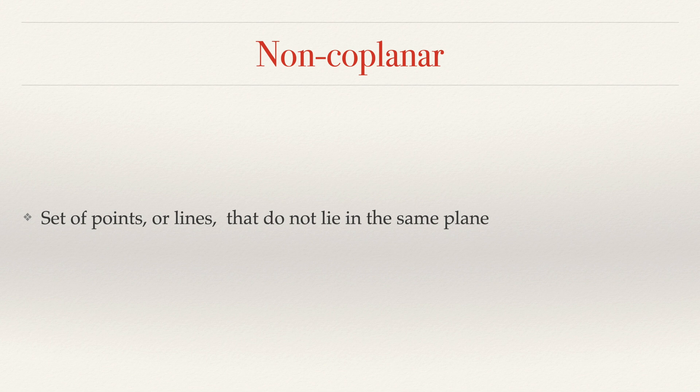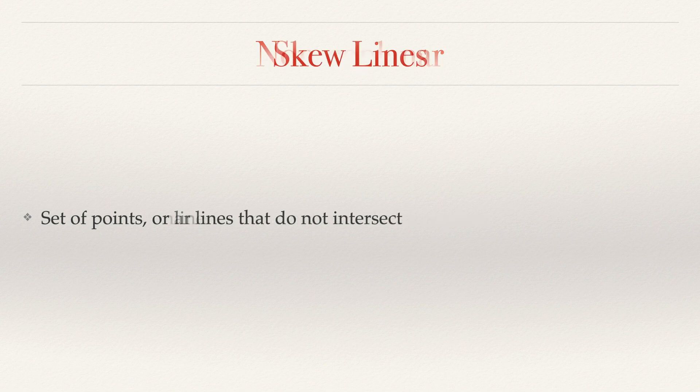Non-coplanar is any set of points that are not all on the same plane, or lines that are not on the same plane. Skew — so if we do have two lines and they are not on the same plane, that is considered skew lines.